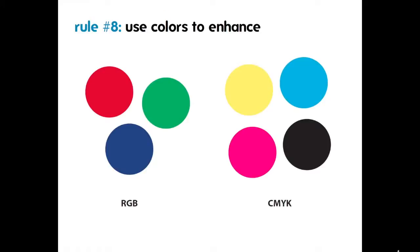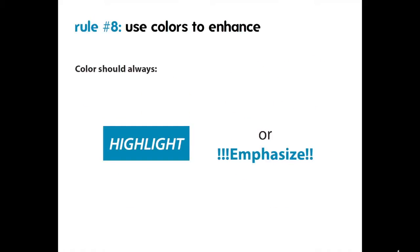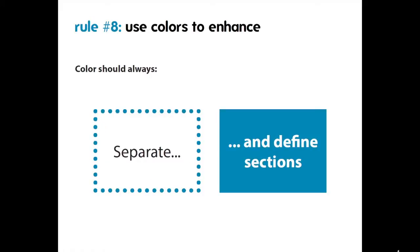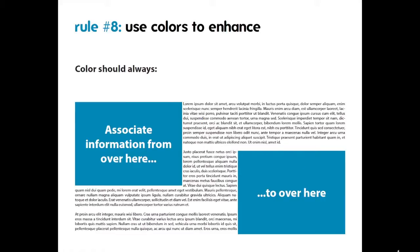Rule number eight: use colors to enhance your design. You should have three to five colors that you use throughout the poster — pick them and stick with them. Don't get too crazy, because color can be really distracting. There are two main color profiles used in graphic design: RGB and CMYK. If you're working with a print document, you'll want to use CMYK; if it's going to live on a screen, use RGB. Color should always be used to highlight or emphasize points or text, and it can be used to separate and define sections, or to associate information from one place to another simply by using it consistently throughout.